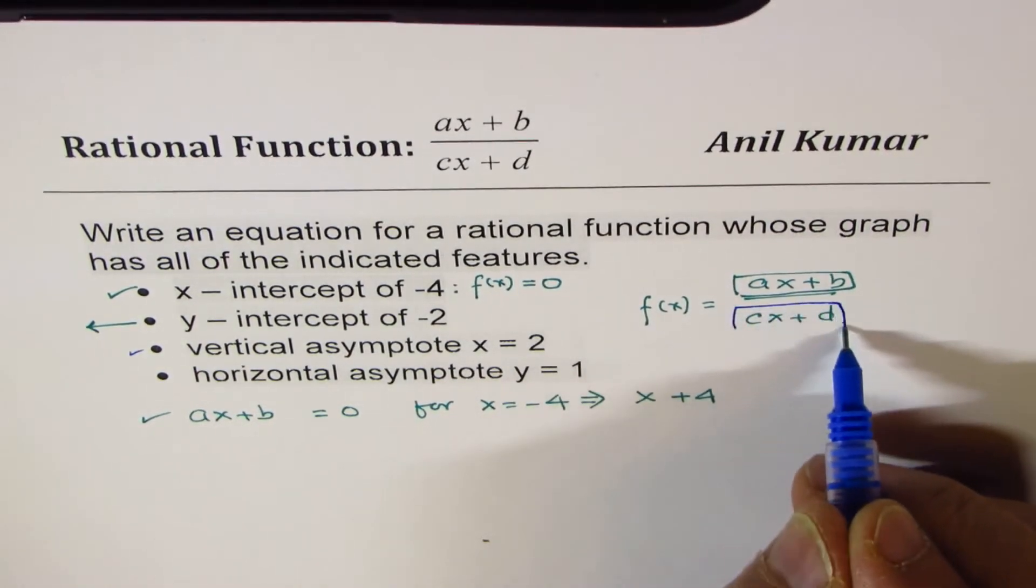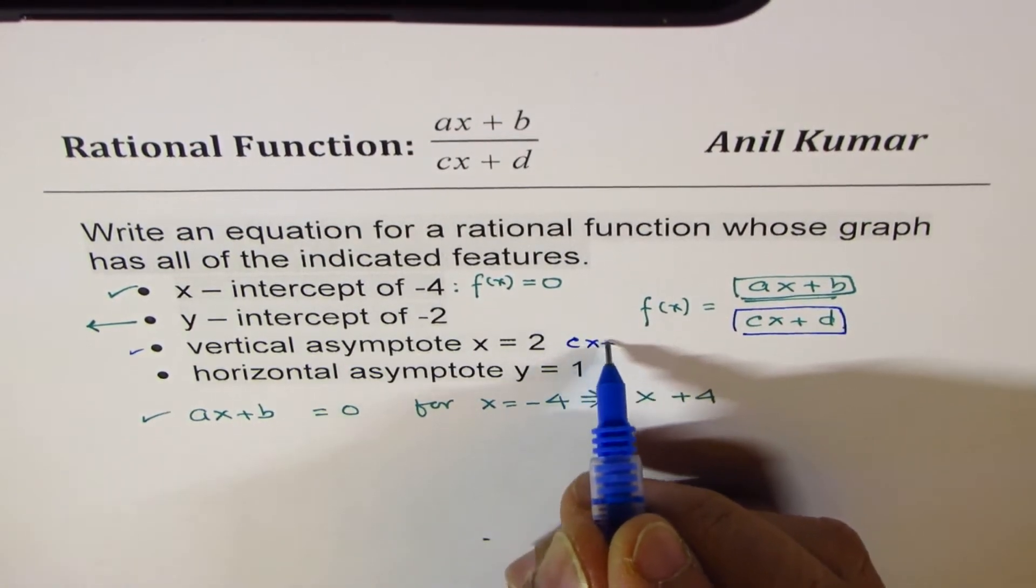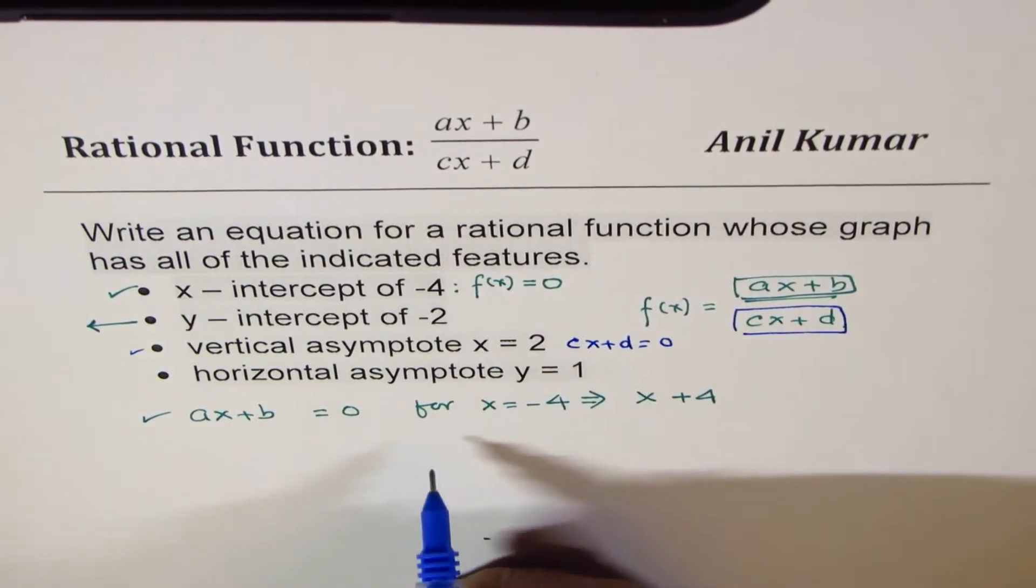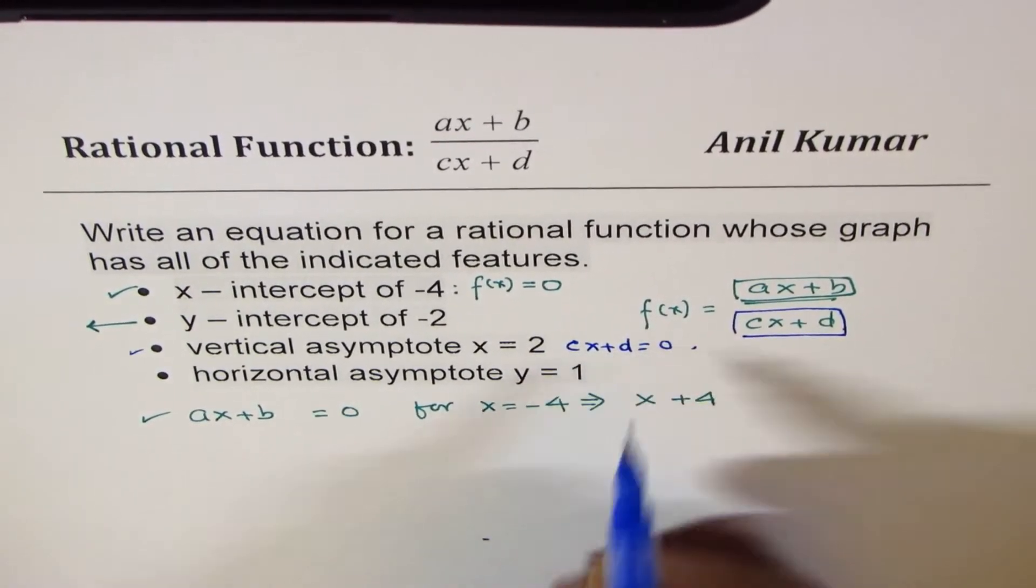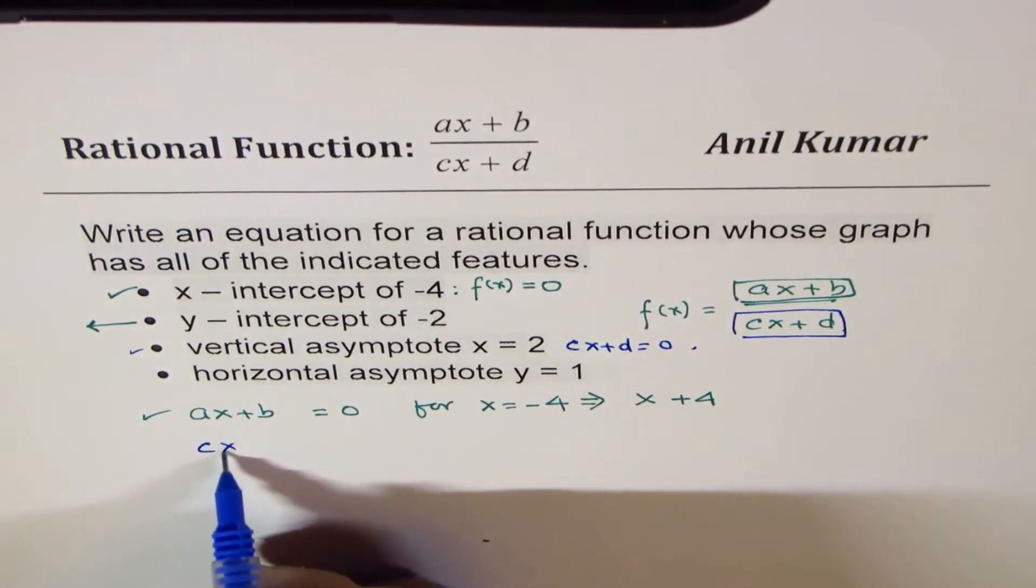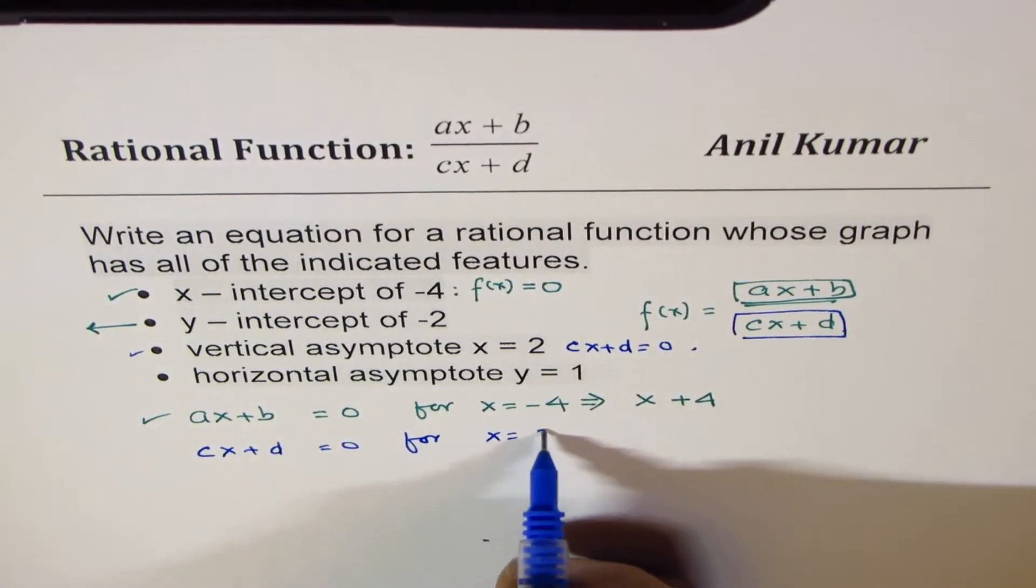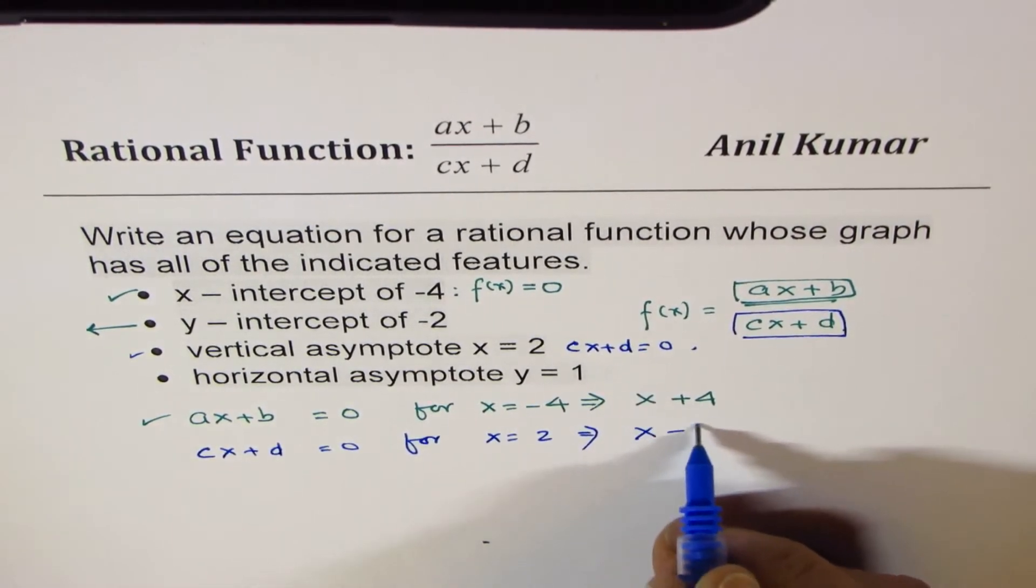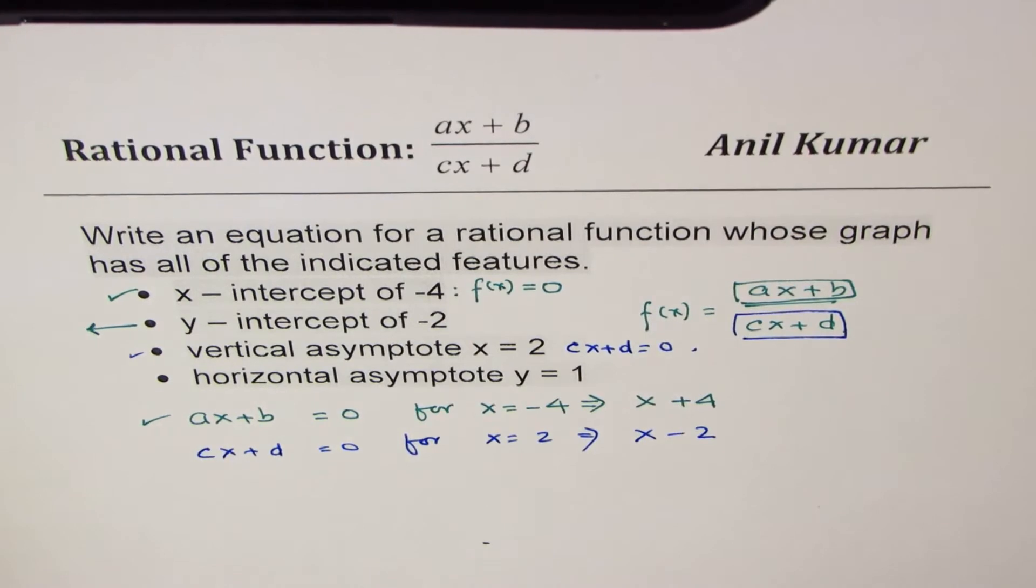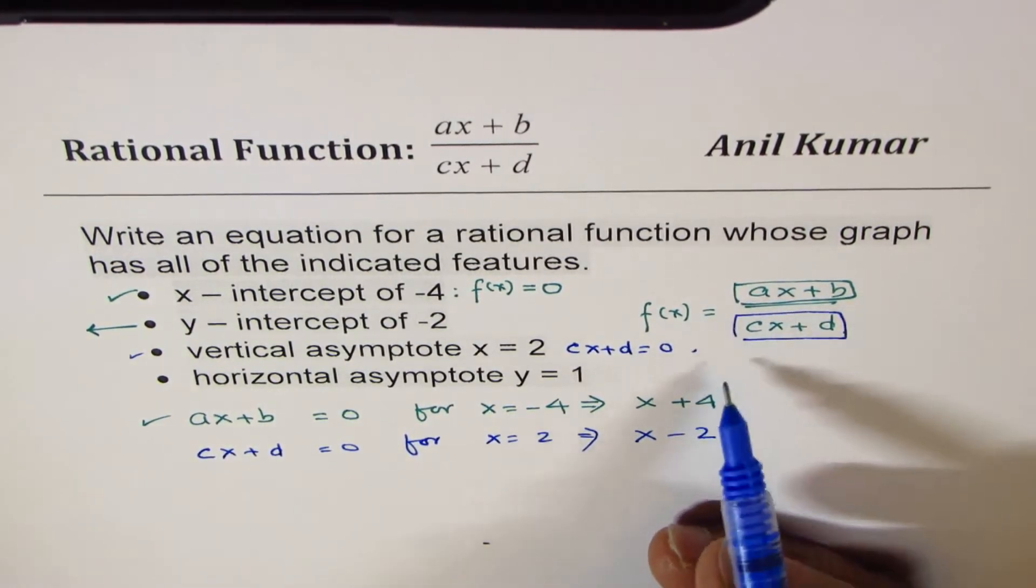That means denominator has to be 0. So this means that cx plus d equals to 0 for x equals to 2. And that is possible if cx plus d equals to 0 for x equals to 2. That means denominator is x minus 2. Only then it will be 0. Now we have these two conditions. Let's apply them.